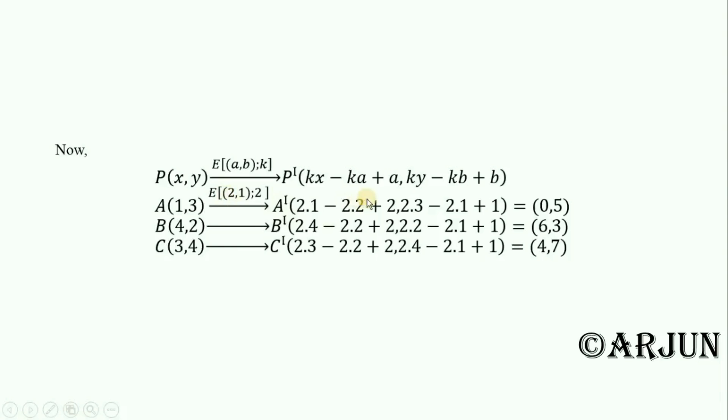Similarly K equals 2, Y equals 3, minus K equals 2, B equals 1, plus B equals 1. 2 times 1 is 2 minus 2 times 4.